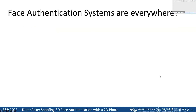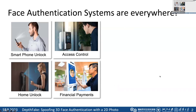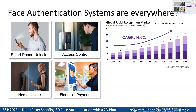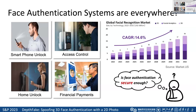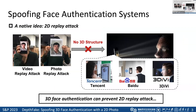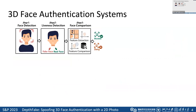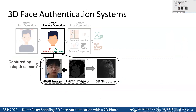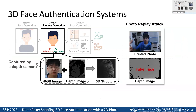In recent years, face authentication is increasingly used in many critical scenarios, and the market of face authentication is growing fast. However, the security of face authentication has always been a topic in the limelight. To cope with photo replay attacks, 3D face authentication has been widely used by many manufacturers such as Tencent, Baidu, and 3DV. The 3D face authentication system deploys a 3D liveness detection module, capturing depth and RGB images simultaneously to generate 3D structures and check whether the object is a live person.